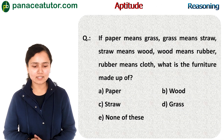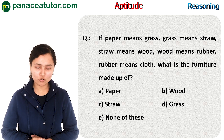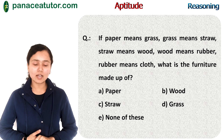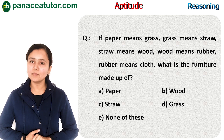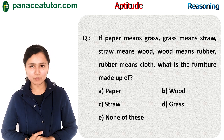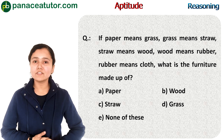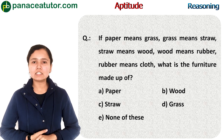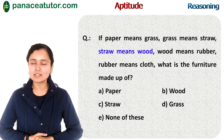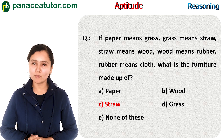Another practice question: If paper means grass, grass means straw, straw means wood, wood means rubber, rubber means cloth — then what is the furniture made of? This question is again based on 'means', so we move in reverse direction. Furniture is made of wood, and in the question it is written 'straw means wood'. So the answer will be straw, that is option C.